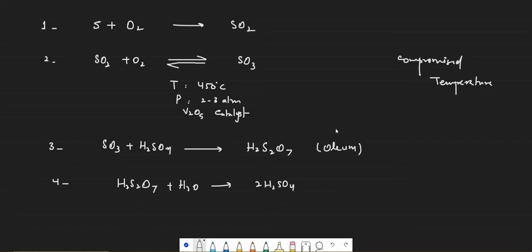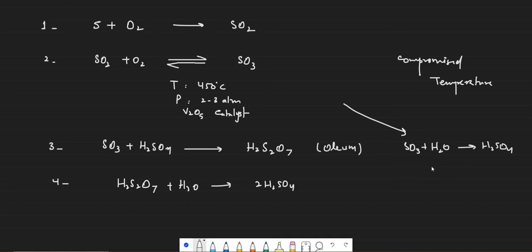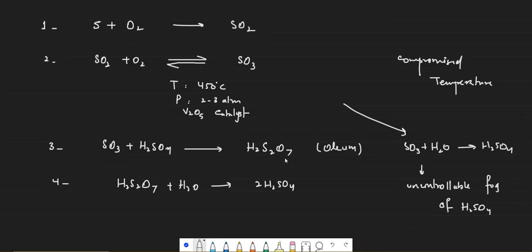There is another route: SO₃ could be dissolved directly in water to form H₂SO₄, and this reaction works fine chemically. However, the problem is that the reaction is too violent to control — it produces an uncontrollable fog of sulfuric acid, which is not desired. So to prevent that, we dissolve SO₃ in H₂SO₄ first to form oleum, and then oleum is dissolved in water to get sulfuric acid of the desired strength.